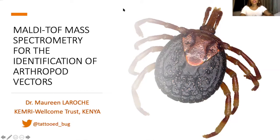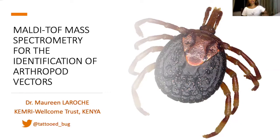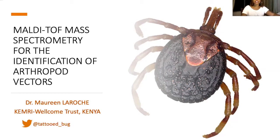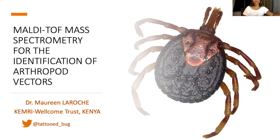Welcome back everyone, and welcome to the new participants. For those who don't know me, I'm Maureen. I created this series this year. I'm French but from a tiny French island in the Caribbean called Martinique. I'm a magical entomologist — I earned my PhD in the south of France, Marseille, and I'm now based in Kilifi, a small coastal town in Kenya. Today I'm going to talk about an approach I've been developing these past six years to identify arthropods.